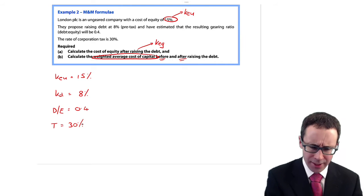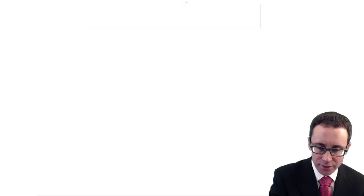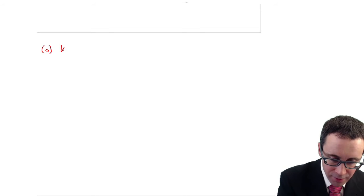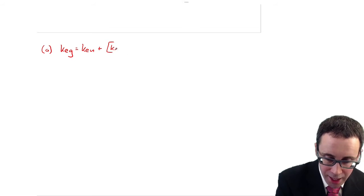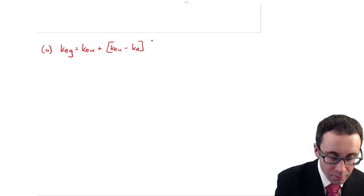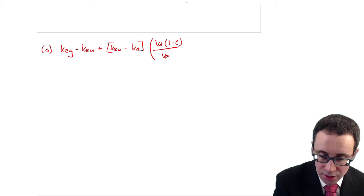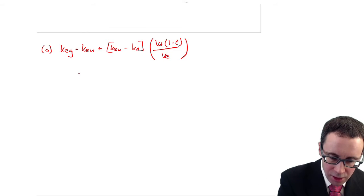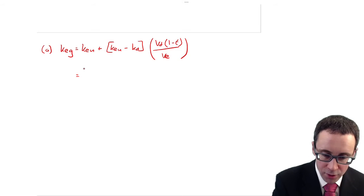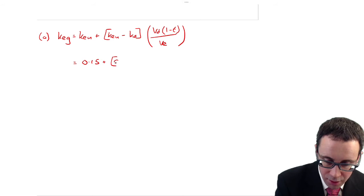So it might help if we write some of the information down. KEU is 15%. They propose raising debt at KD, which is their pre-tax, so KD is 8%. And have estimated that the resulting gearing ratio of debt to equity will be 0.4. The rate of tax, T, is 30%. Much lower than what it used to be. So what have we got? It was the cost of equity after raising the debt. So if we're going to go through there and think about it in terms of part A, I will write the formula out. There's no need for you to go through that and do so within the exam. Just put the numbers in as you meet them.